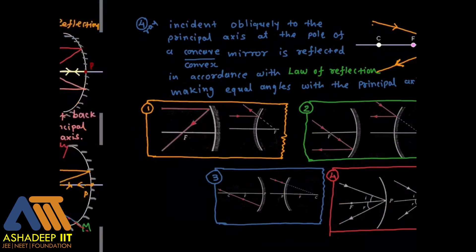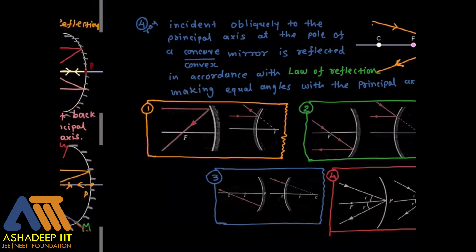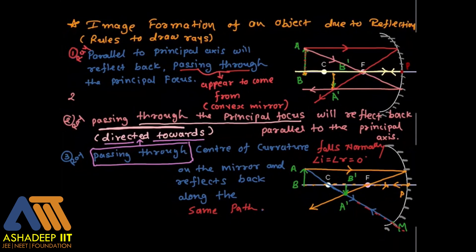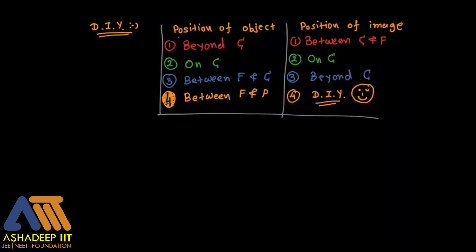Now draw diagrams of objects and images using these four rules as a do-it-yourself exercise. I have given some positions of objects in a table — from beyond C up to four different positions — and you need to find the corresponding image positions. The fourth one is the most important because I have not done it. Find the answer and see you in the next lecture. Enjoy and take care of yourself, thank you.